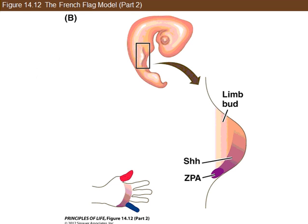Looking at the French flag model applied to a limb of an embryo — specifically a limb bud — you'd have a certain morphogen in higher concentrations in certain regions. Looking at the hand, higher concentrations of the morphogen, in this case ZPA, signal for the production of the pinky finger, while a very low concentration signals the production of the thumb. Morphogen concentration has a direct effect on the types and organization of different tissues.